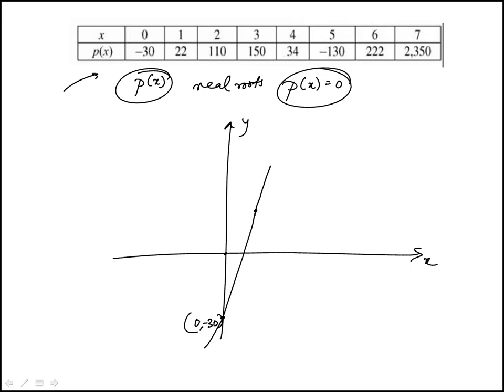At x=2 it's 110, at x=3 it's 150, then at x=4 it decreases. At x=5 it goes down to -130, and at x=6 it goes back to positive 222, then it increases.